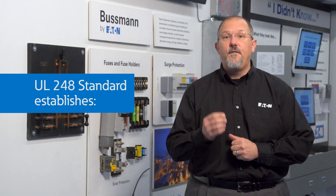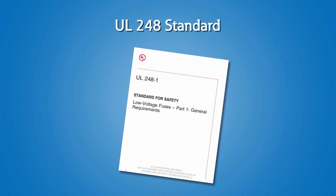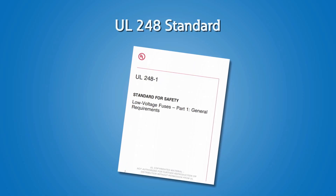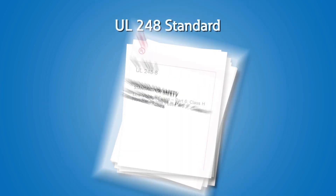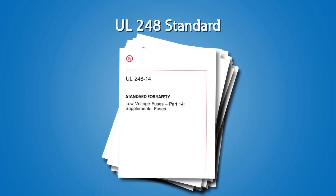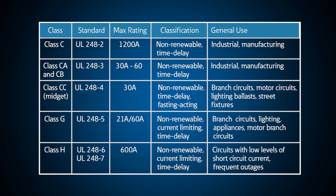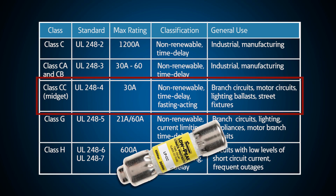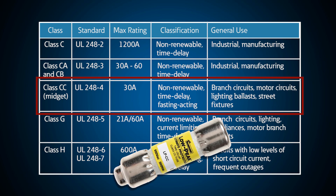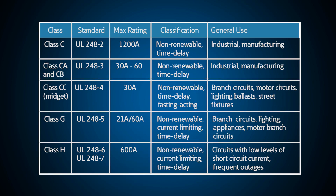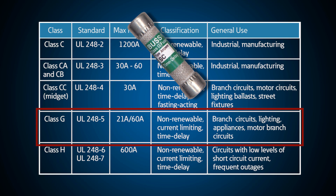UL248-1 covers general requirements. Beyond that, additional documents identify all the various fuse types, each with a purpose in the power distribution system — from a circuit board in your computer to a utility transformer outside your building. Class CC fuses, listed to UL248-4, are small fast-acting fuses for protection of branch circuits, motor circuits, lighting ballasts, and street light fixtures.